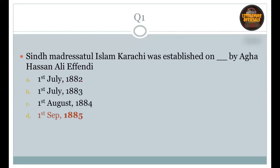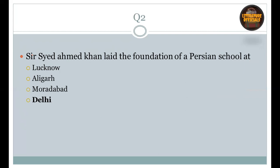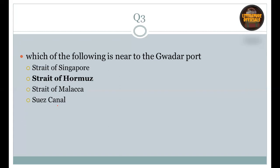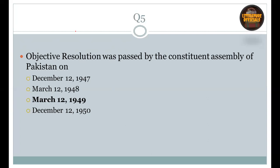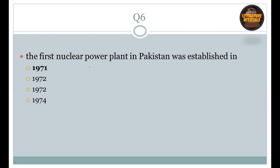Next section is Pakistan Studies. Question number 1: Sindh Madrasatul Islam Karachi was established by Agha Hasan Ali Effendi. Right option is D: 1st September 1885. Question number 2: Sir Syed Ahmed Khan laid the foundation of a Persian school. Right option D: Delhi. Question number 3: Which of the following is near to Gwadar Port? Right option is B: Strait of Hormuz. Question number 4: Television centers of PTV were established in Karachi and Rawalpindi/Islamabad in 1963, right option C. Question number 5: The Objectives Resolution was passed by the Constituent Assembly of Pakistan on right option C: March 12, 1949.